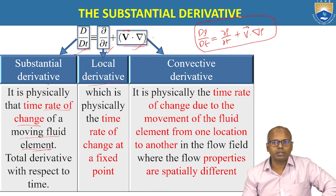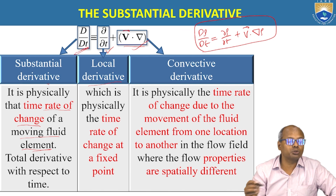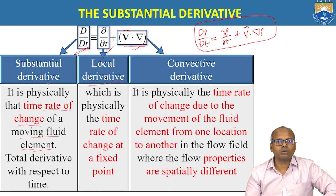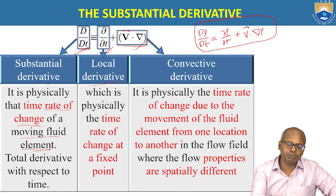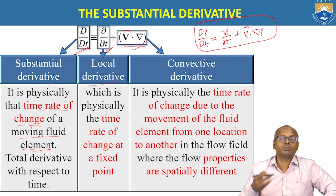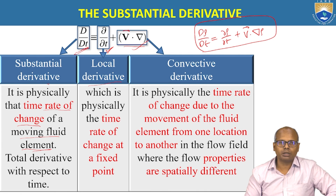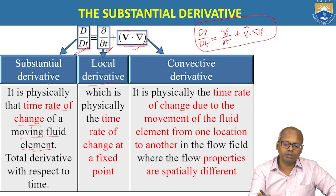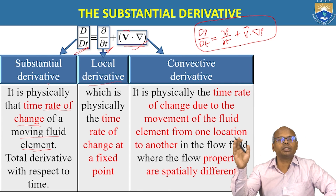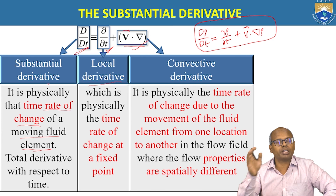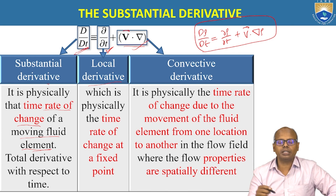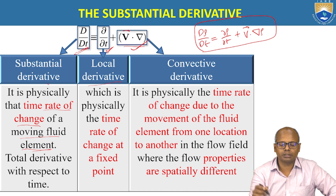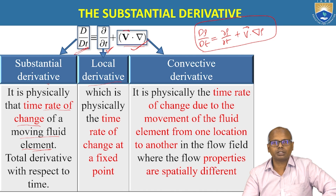So these are three things: D rho by Dt is the total change in fluid property with respect to time; dou rho by dou t is the change at a given particular location with respect to time; and V-bar dot del rho is the change due to the movement of the fluid element from one location to another. The substantial derivative D rho by Dt equals dou rho by dou t plus V-bar dot del rho.